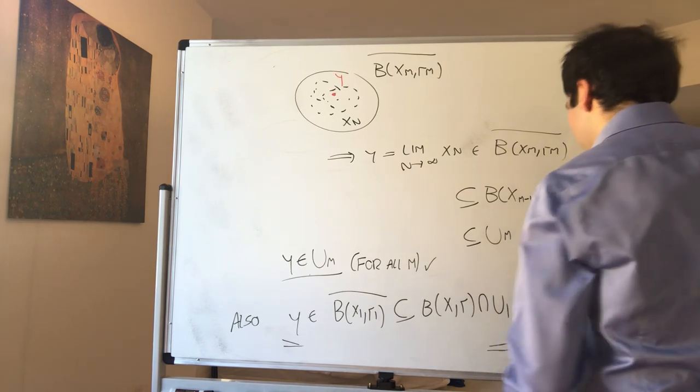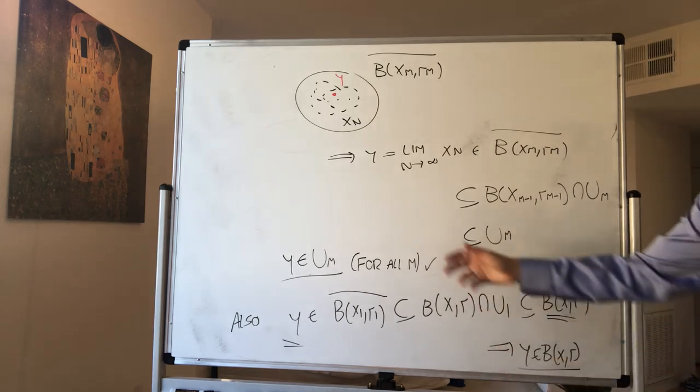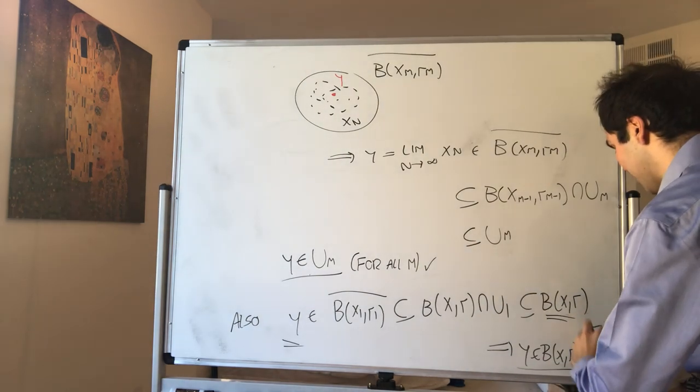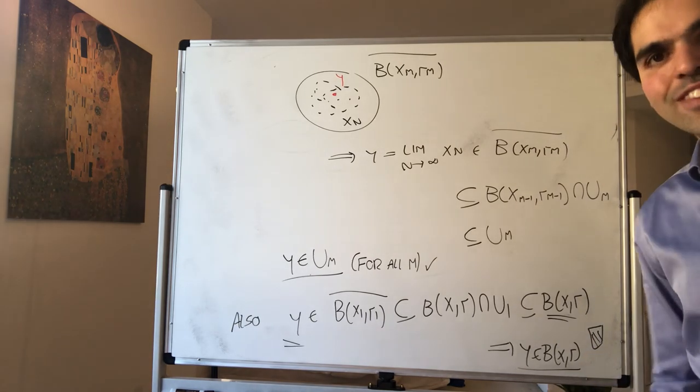And therefore we're done. We found a point in that ball that's also in all of the um's, and therefore the intersection of um is dense. All right, thank you very much.